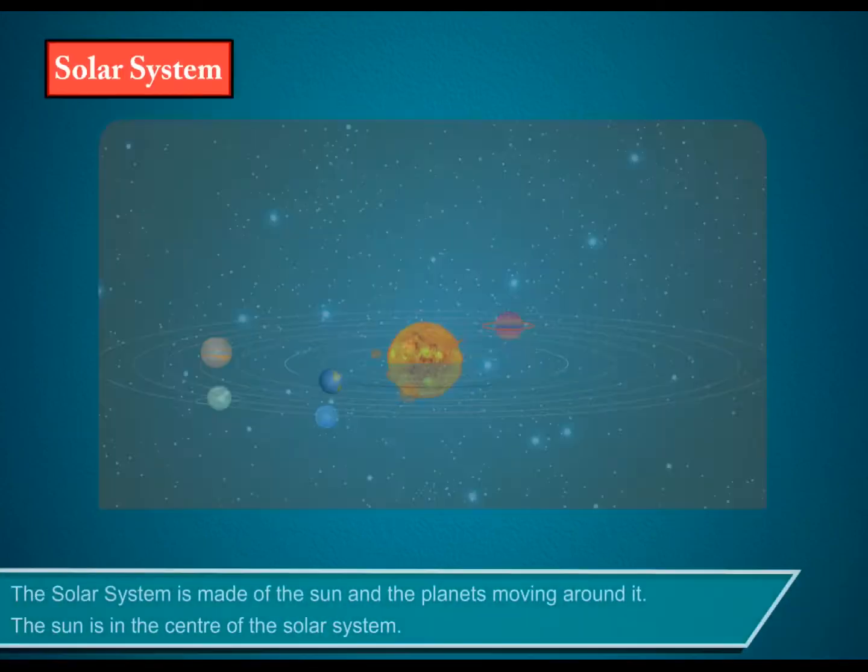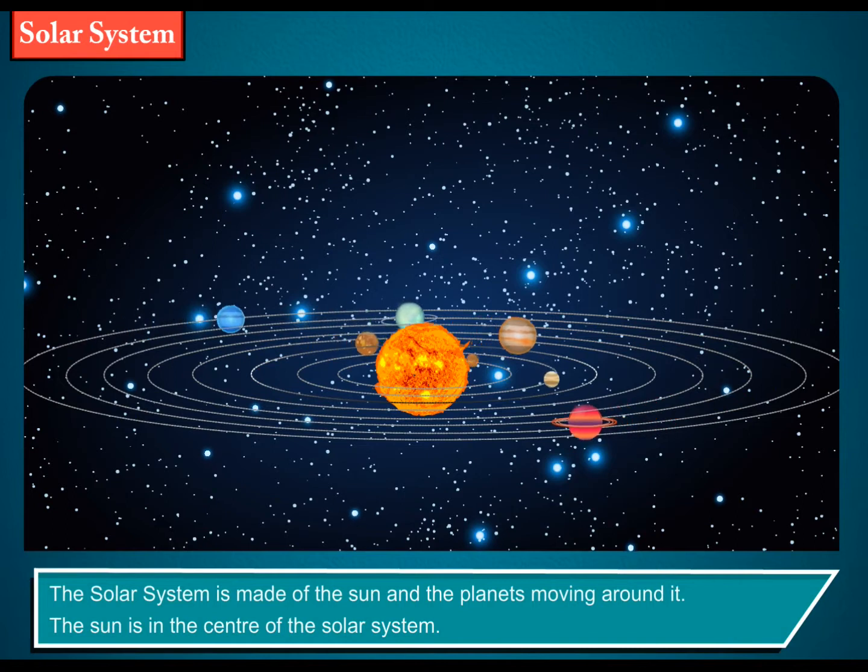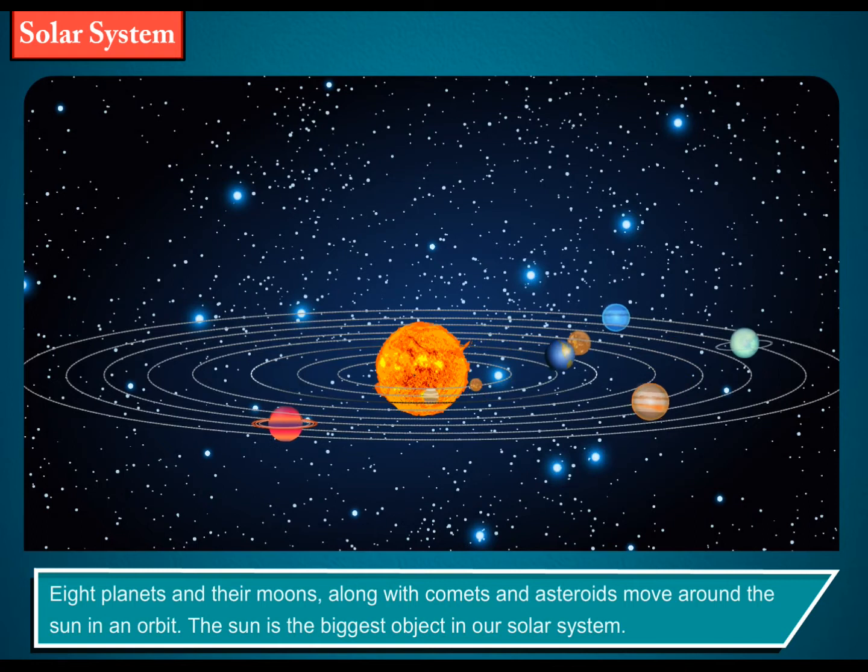The solar system is made of the Sun and the planets moving around it. The Sun is in the center of the solar system. Eight planets and their moons, along with comets and asteroids, move around the Sun in an orbit.